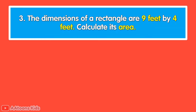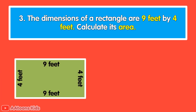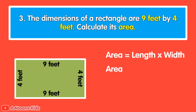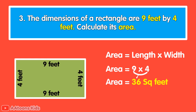The dimensions of a rectangle are 9 feet by 4 feet. Calculate its area. The area of a rectangle is length multiplied by width. Length is 9 feet and width is 4 feet. 9 multiplied by 4 is 36, so the area of the rectangle is 36 square feet.